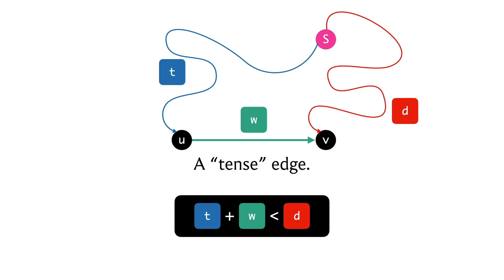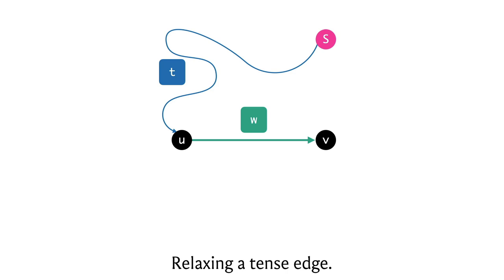To relax the edge, we replace the old distance information for v with the new value t + w. The distance array d[v] is updated to reflect this better path from the source. We have performed this relaxation operation many times in Dijkstra's algorithm.